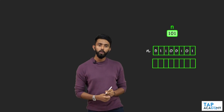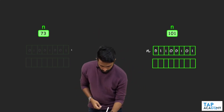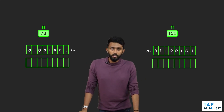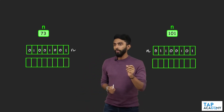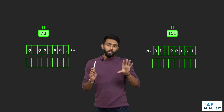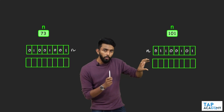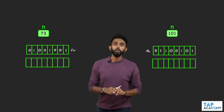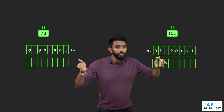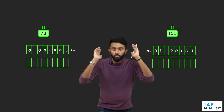Before we write the logic to find the longest consecutive one sequence's length, let's start with something simpler. Here n is 101 — that's the binary representation of n. And for n equals 73, this is its binary representation. I want to do one operation that tells me whether there are consecutive ones or not — not finding the longest sequence, just: are there consecutive ones, yes or no?